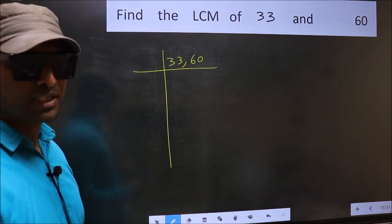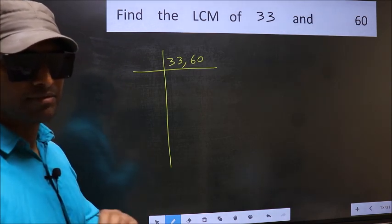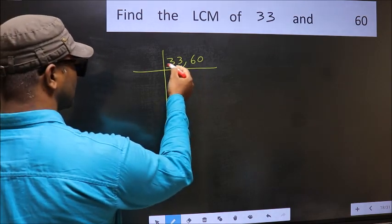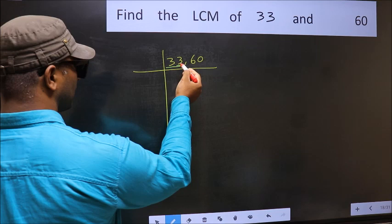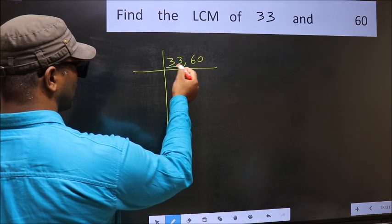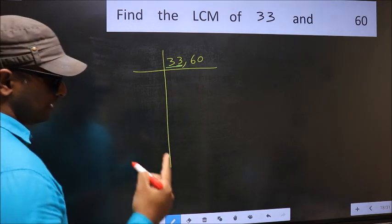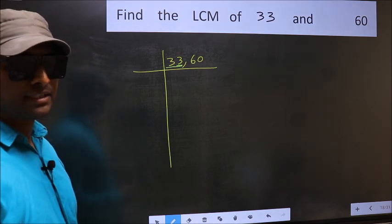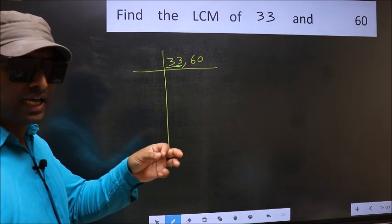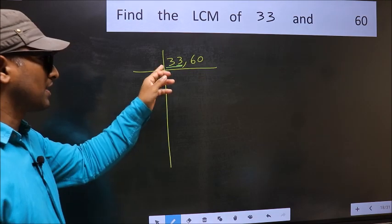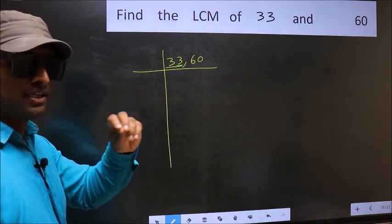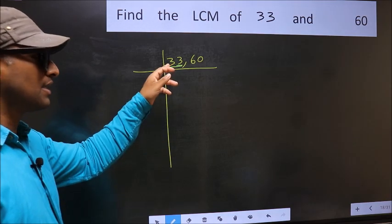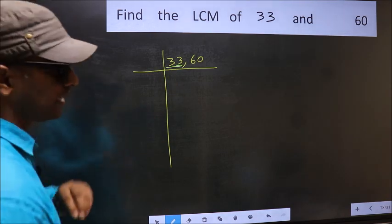Now you should focus on the first number, which is 33. In this number, last digit 3, not even. So this is not divisible by 2. Next, prime number 3. To check divisibility by 3, we should add the digits. 3 plus 3, we get 6. And 6 is divisible by 3. So this number also divisible by 3.